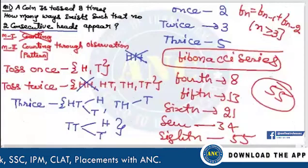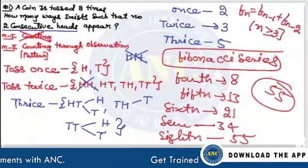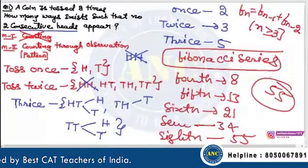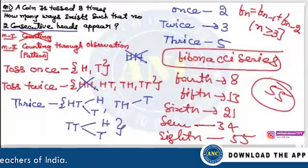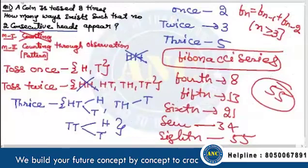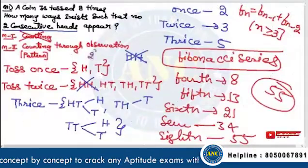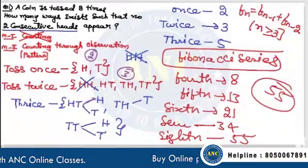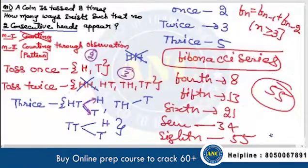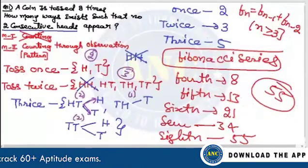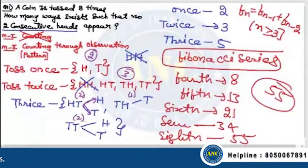A student messaged asking to solve this question. It is clear: once gives Head and Tail. Twice: Head-Head cannot appear — deleted. First time 2 ways, second time 3 ways, third time 5 ways. After TT can come here: 2 ways, here 1 way, here 2 ways — 2+1+2=5. Once=2, twice=3, thrice=5, fourth=8, fifth=13.